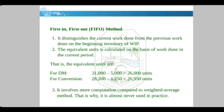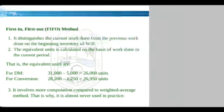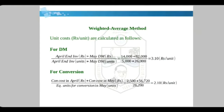The second method is FIFO — First In First Out. It distinguishes current work done from previous work done on beginning WIP. Equivalent units are calculated only on the basis of work done in the current period: for direct material 31,000 − 5,000 = 26,000 units; for conversion 28,200 − 1,250 = 26,950 units. FIFO involves more computation compared to the weighted average method and is almost never used in practice.